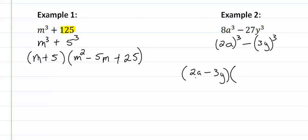Square the first term which means I have 4a squared, opposite sign which would be plus 2a times 3y gives us 6ay. Square the last term and we get 9y squared and we're done.